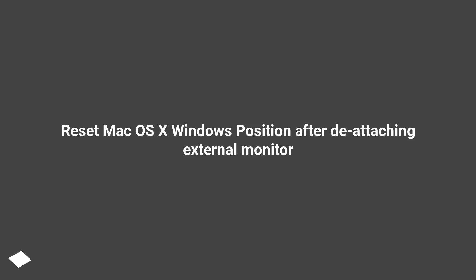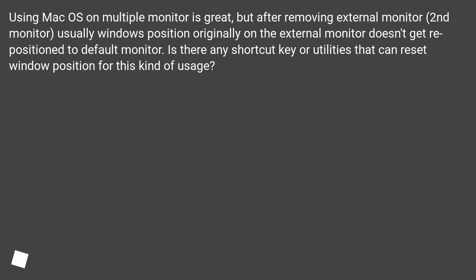Reset Mac OS X window positions after de-attaching an external monitor. Using Mac OS on multiple monitors is great, but after removing the external monitor, the windows originally positioned on the external monitor usually don't get repositioned to the default monitor. Is there any shortcut key or utility that can reset window positions for this kind of usage?